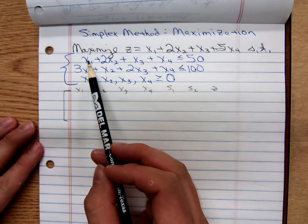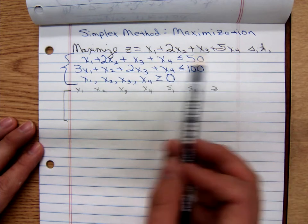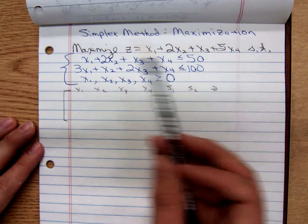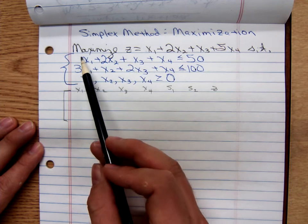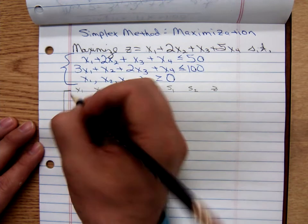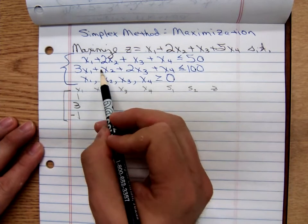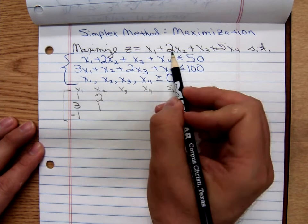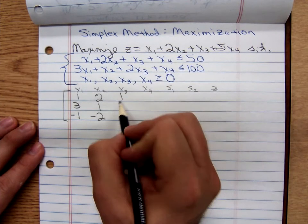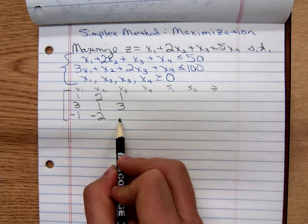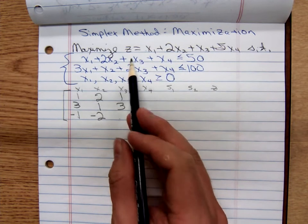The coefficients for x1 are 1, 3. Remember what we do with the objective function. We pick them up, move them over to the left side, so that 1x1 becomes a negative 1. So we have 1, 3, negative 1. We have a 2, 1. Change the sign, negative 2.